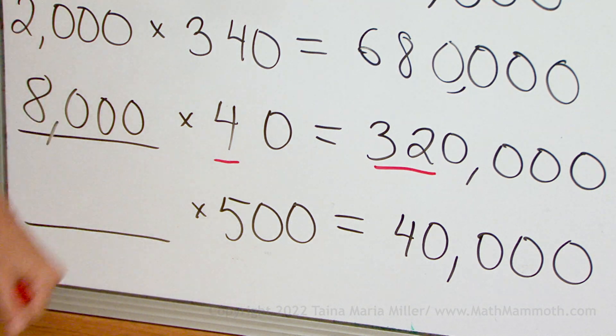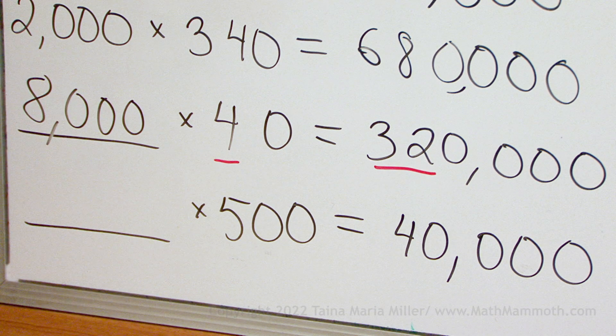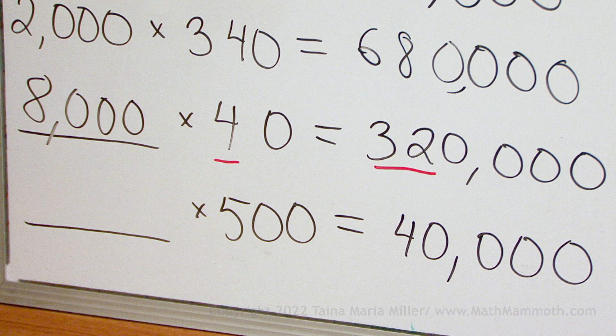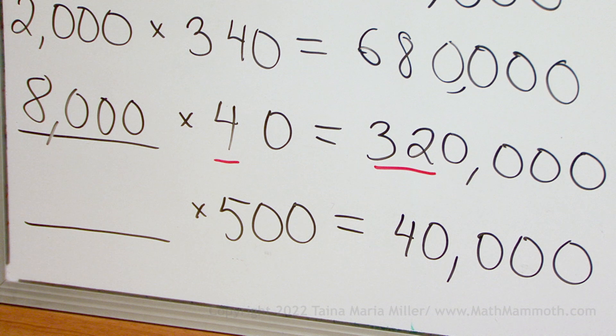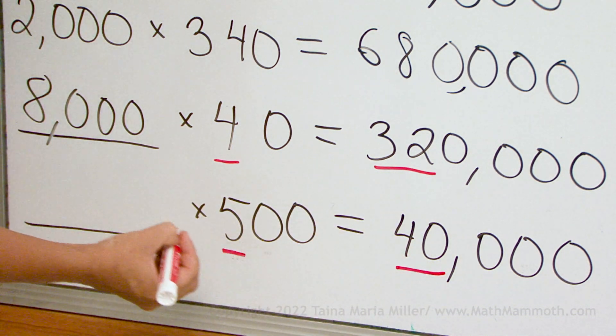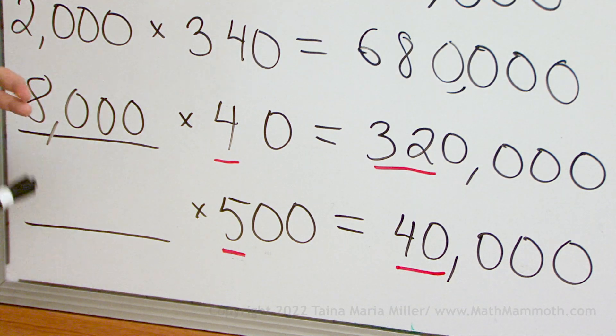Surely you can solve this one. Something times 500 equals 40,000. At first, think of the 40 and the 5. They are in your multiplication tables. What number times 5 equals 40? It is 8. 8 times 5.